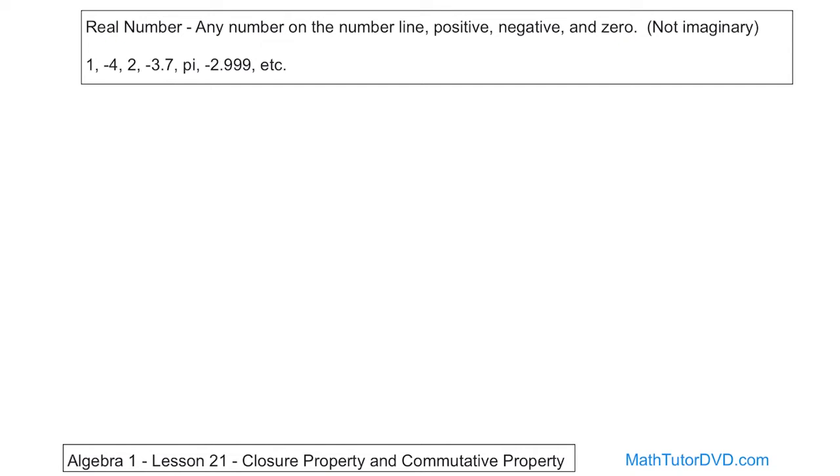Any number you can dream up is called real. The only time it's not a real number is when there's an imaginary I involved in there. So now that we've got this definition of what a real number is, essentially any number you can dream up, positive or negative, including decimals, fractions, things like that.